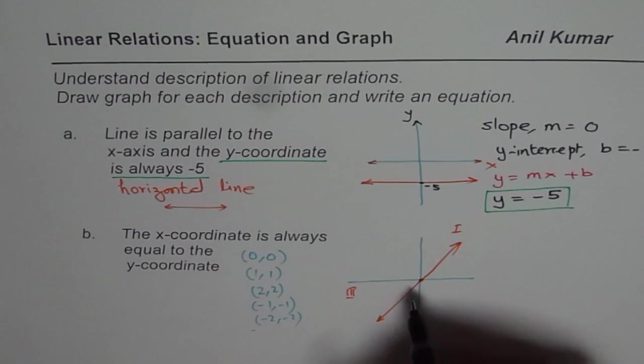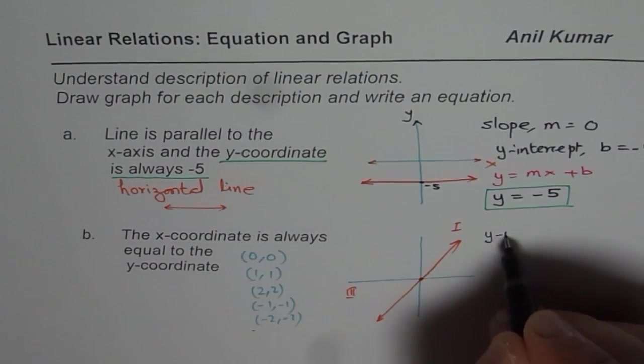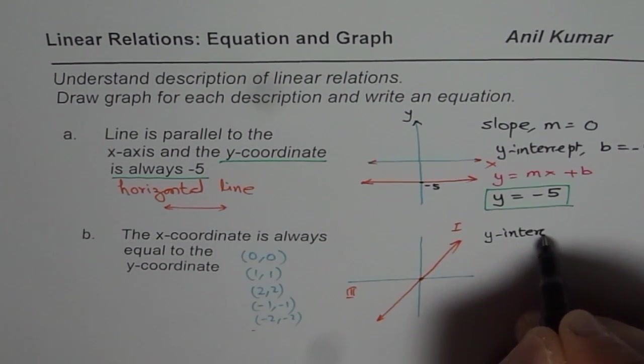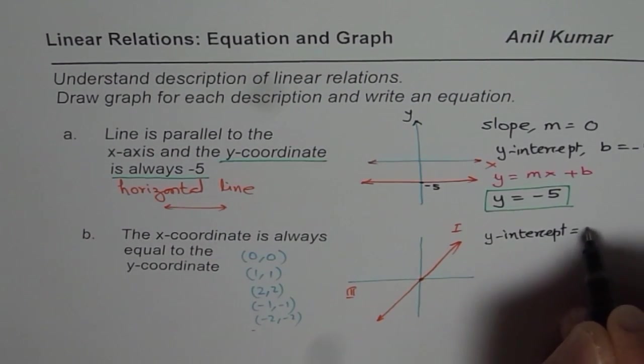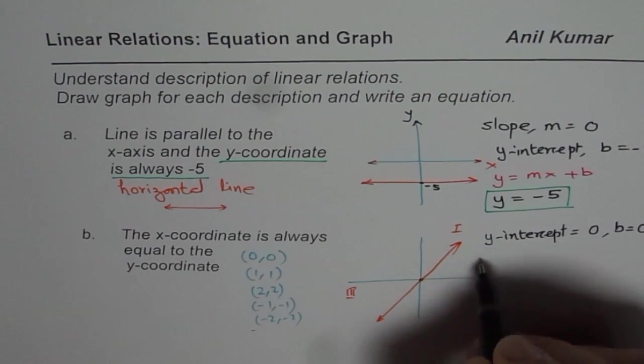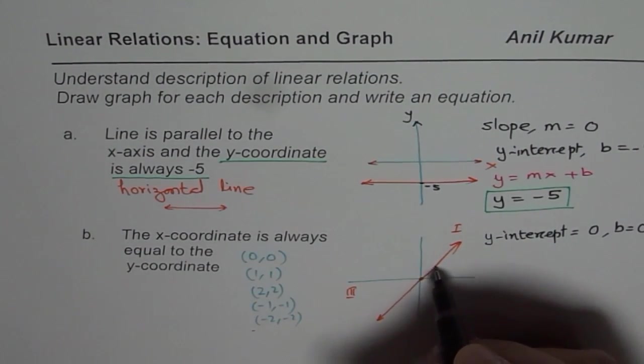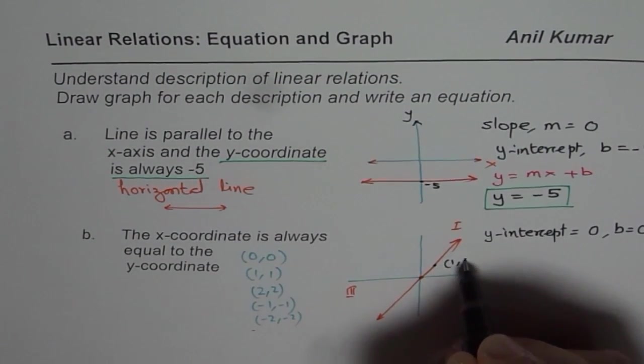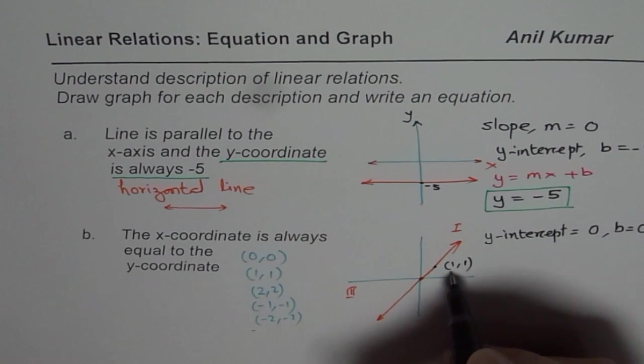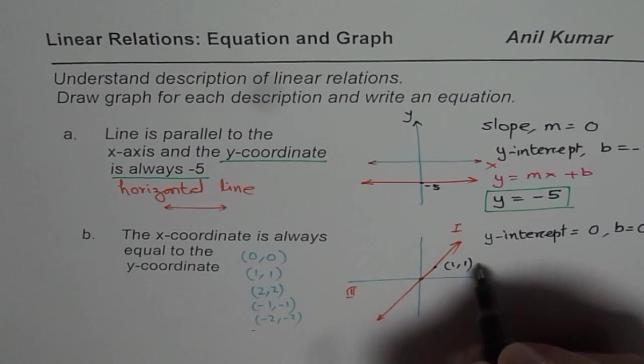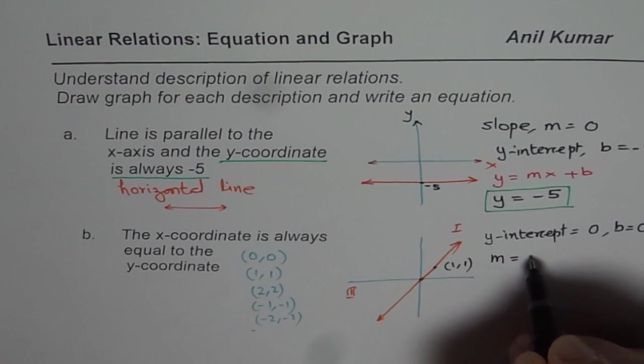So if a line passes through origin, then y-intercept is 0, or we can say b = 0. And what is the slope for this line? Since the points are (1,1), rise over run is 1 over 1. Therefore slope m = 1.